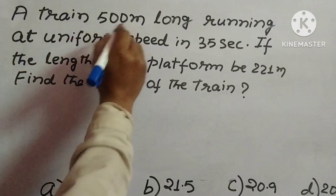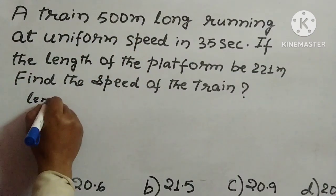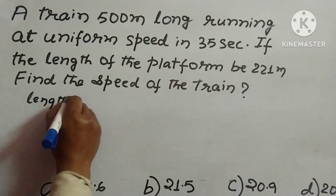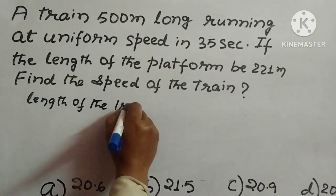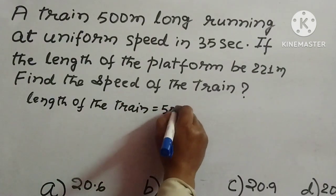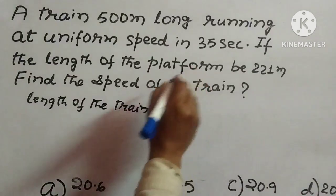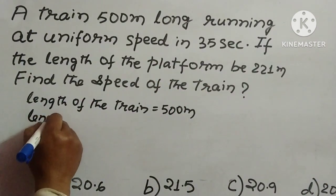Length of the train is given: 500 meters. So length of the train is 500 meters, and what is the length of platform? You need to consider that also.